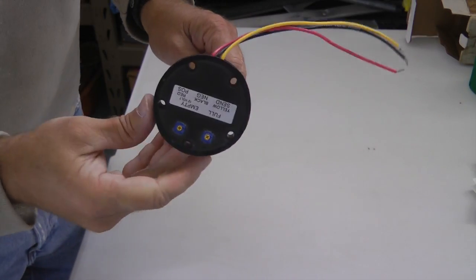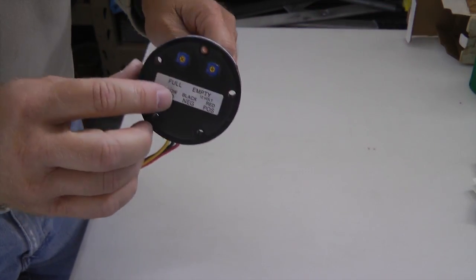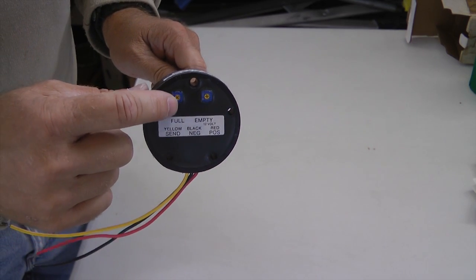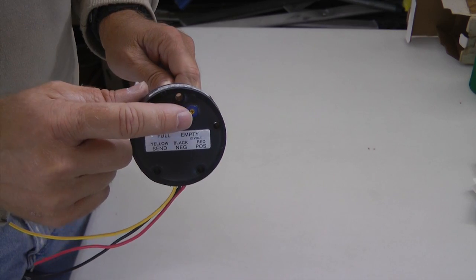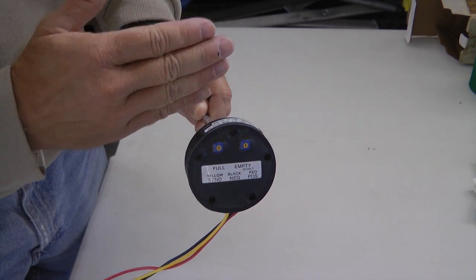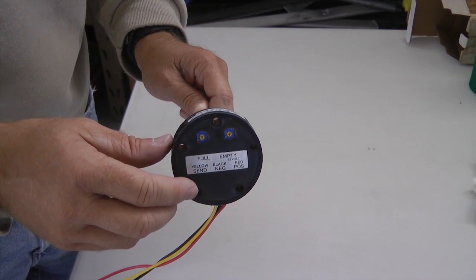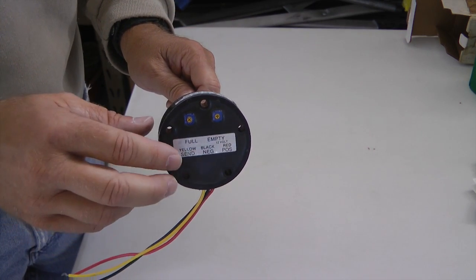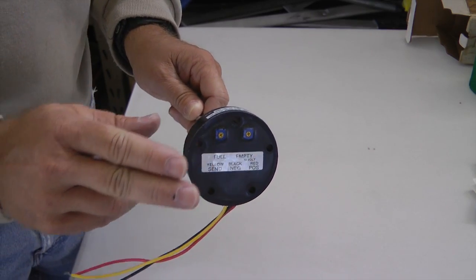If you look at the top, we have a way to calibrate the unit with an adjustment for high level and low level. So we'll adjust that with a screwdriver with our gas at the highest point and then at the lowest point, so that we have an accurate reflection for the voltage reading at high level and low level.